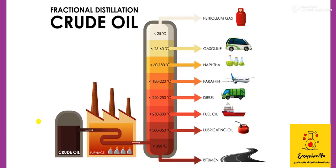This picture shows the fractionating column that is used for fractional distillation of coal tar, separating all components on the basis of differences in their boiling points.